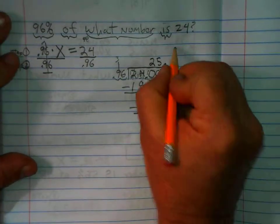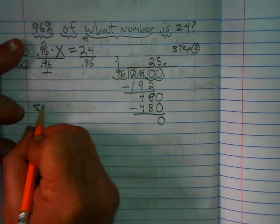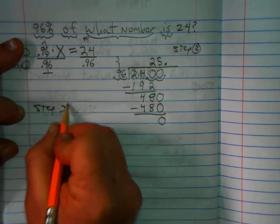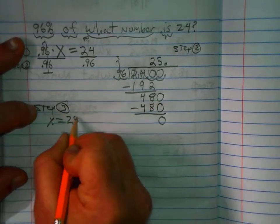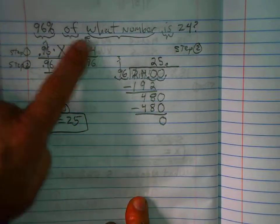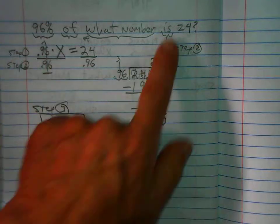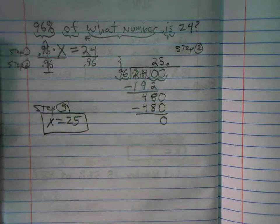Step three. X is equal to 25. So 96% of what number is 24? 96% of 25 is 24. That's it.